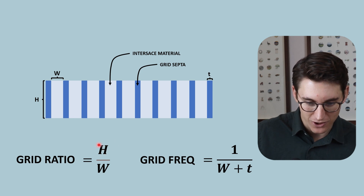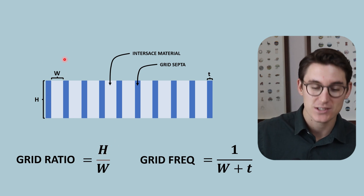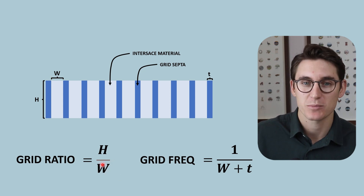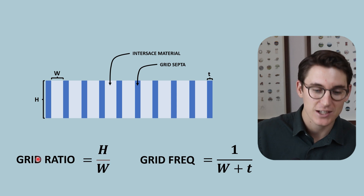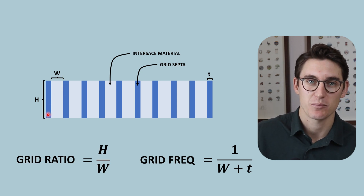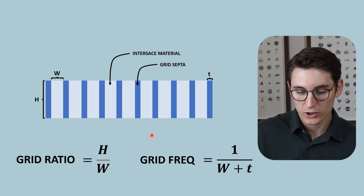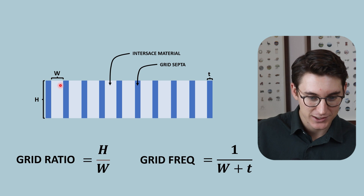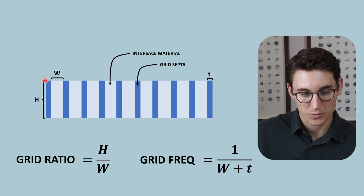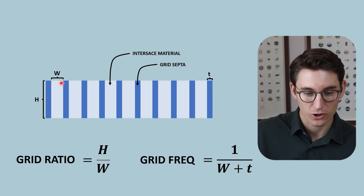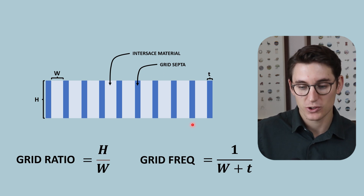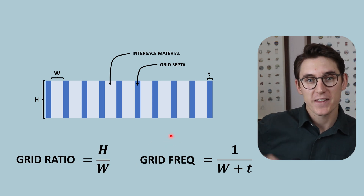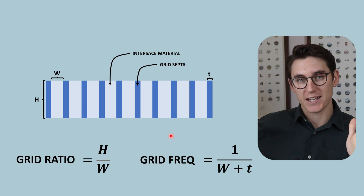Grid frequency is defined by adding the septal thickness and interspace width together to get the distance between consecutive septa. Dividing one by that distance gives us the grid frequency — the number of grid septa per unit length. As grid ratio increases, fewer photons reach the x-ray detector and the exposure at the detector decreases.